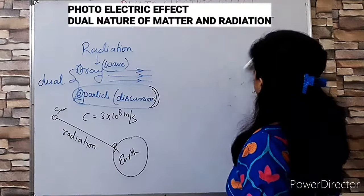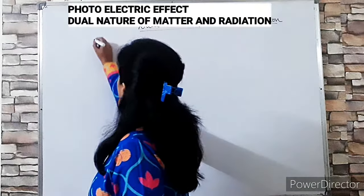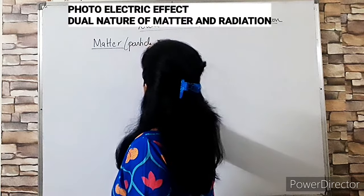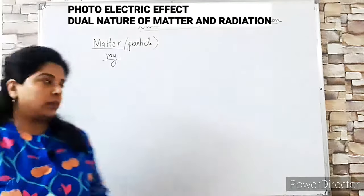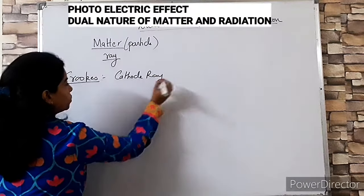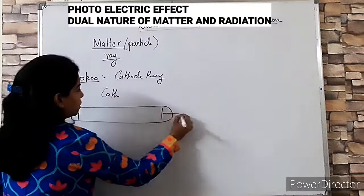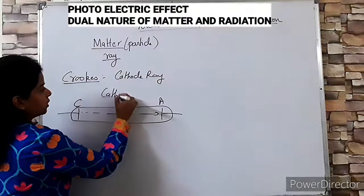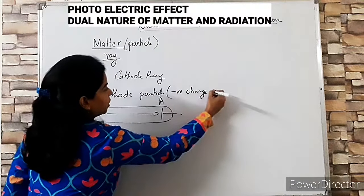Now let's discuss the ray nature of matter. Matter's particle nature is already known — atoms and molecules. The ray nature of matter was identified through Crookes' cathode ray experiment. In a discharge tube experiment, rays travel from the cathode toward the anode. These are negatively charged particles — electrons — moving at high speed. Because of their speed, we cannot count individual electrons; they form a ray.